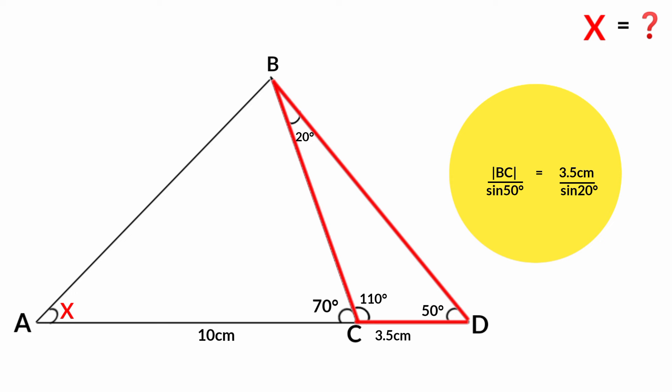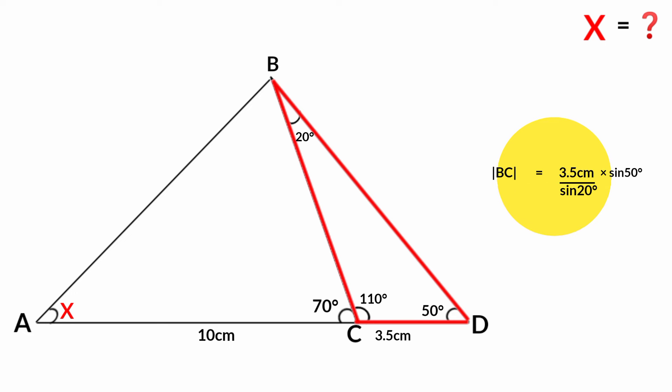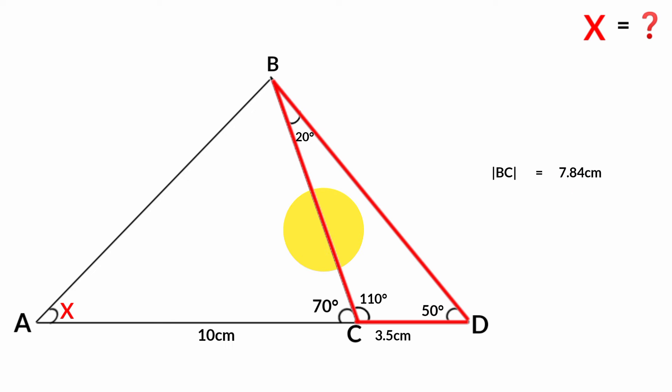Multiplying both sides by sine 50 degrees — sine 50 degrees cancels — and if you press your calculator, BC is 7.84 centimeters. Therefore this side BC is 7.84 centimeters in length.